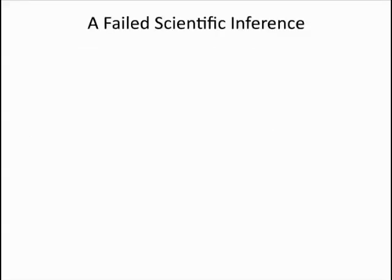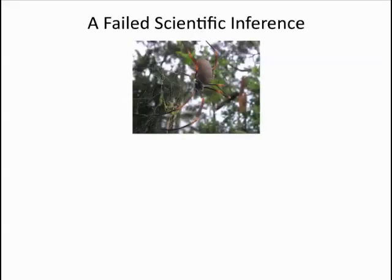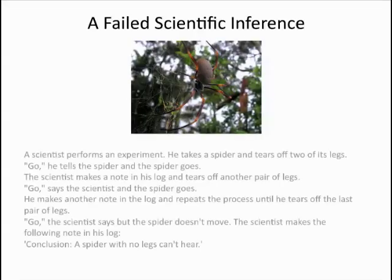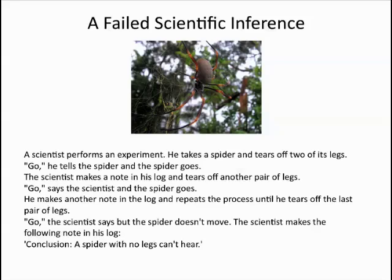Finally, let's take a look at a failed scientific inference. Note the spider. A scientist is about to perform an experiment. He takes a spider and tears off two of its legs. "Go," he tells the spider, and the spider goes. The scientist makes a note in his log and tears off another pair of legs. "Go," says the scientist, and the spider goes. He makes another note and repeats the process until he tears off the last pair of legs. "Go," the scientist says, but the spider doesn't move. The scientist makes the following note: Conclusion — a spider with no legs can't hear.